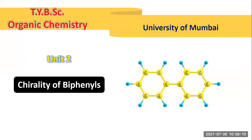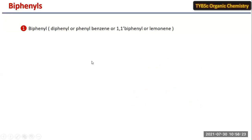We are going to consider the chirality of biphenyls — that is the third topic of this stereochemistry chapter. Biphenyls, which we can also call diphenyl, is also known as phenyl benzene, 1,1-biphenyl, or lemonol. These are the different names of biphenyls.